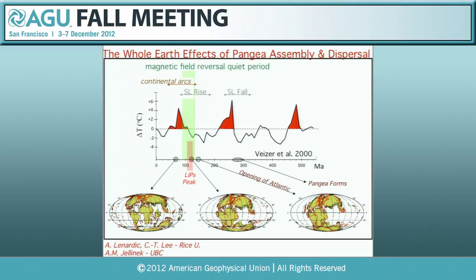Within the Cretaceous, there is a burst in large igneous province activity — the LIPs defined by the volume of basalt placed on the surface of the Earth. There are also changes in the nature of continental arcs. All through this, Pangea, the last supercontinent, is breaking up. We want to explore the potential connections between all of these phenomena. We are not the first to consider this, and different perspectives on this interesting problem are good.